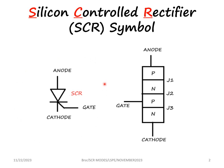The symbol of SCR is shown here. It has three terminals: anode, cathode and gate. It has got four layers P, N, P, N, and because of these four layers it has got three junctions J1, J2 and J3.